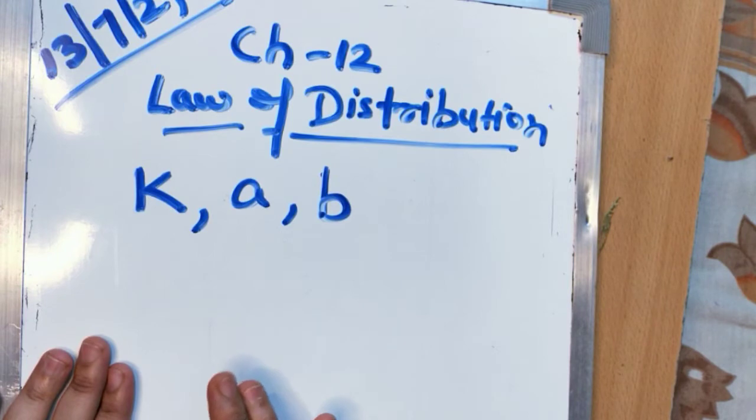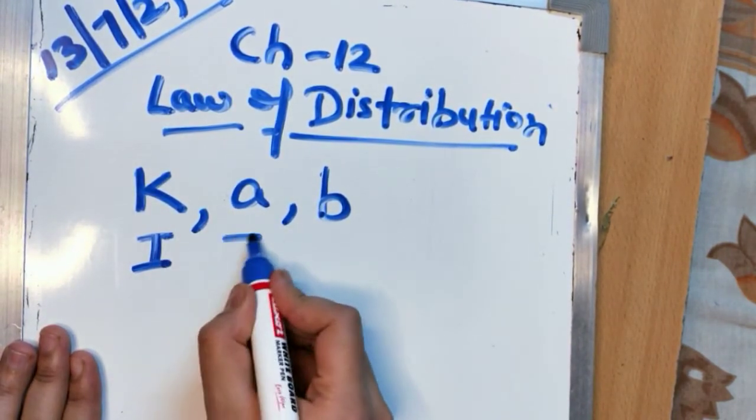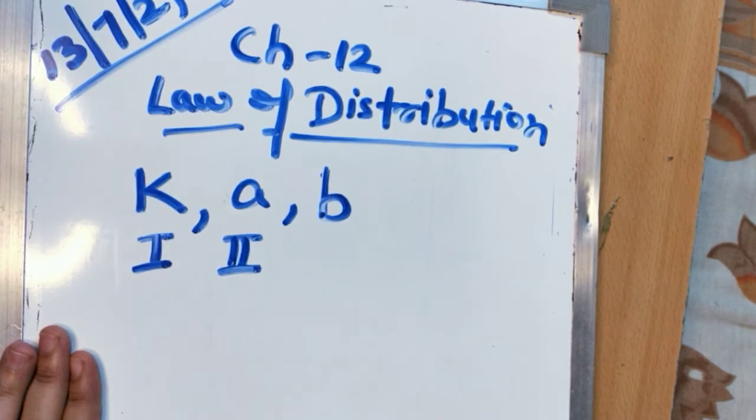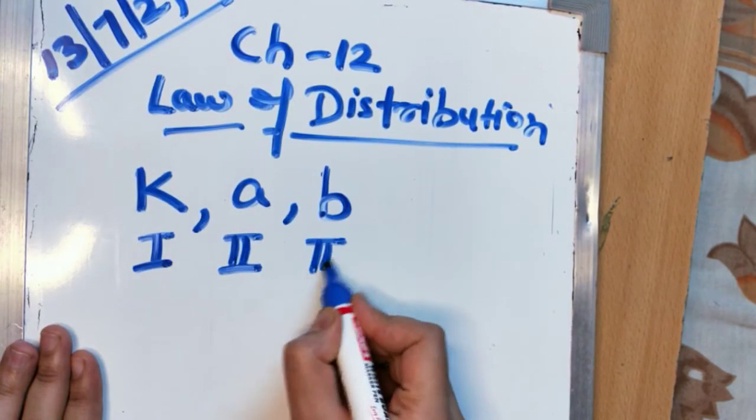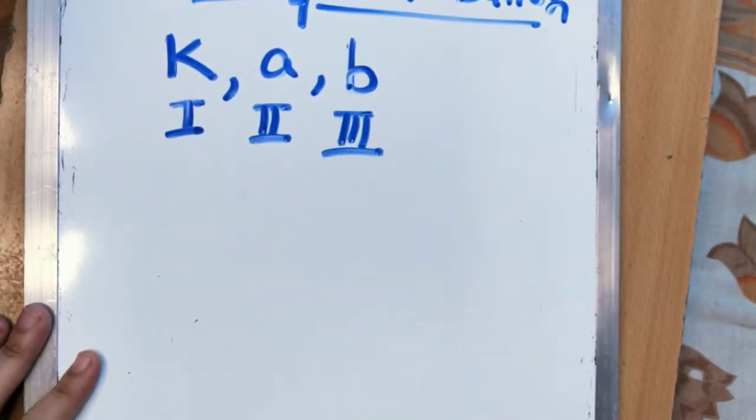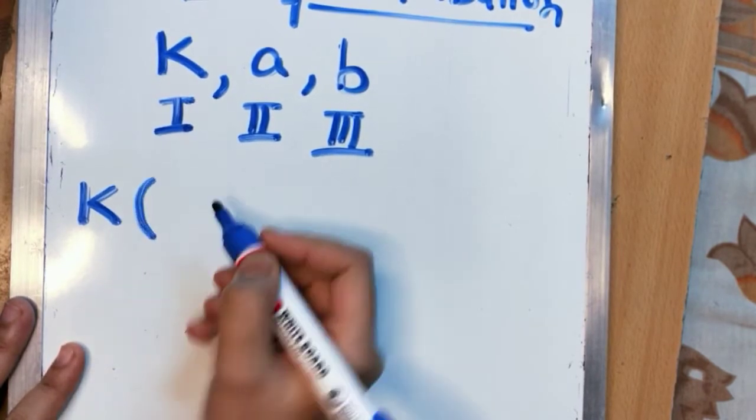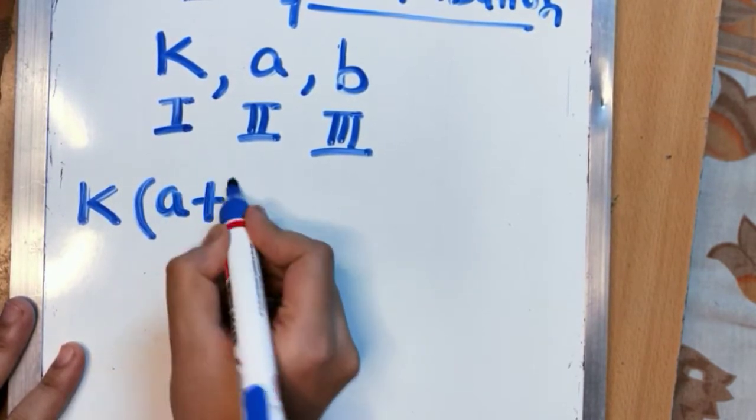Suppose there are three numbers. Suppose k be the first number, a be the second number and b be your third number. Now suppose I am multiplying this k with the summation of a and b.